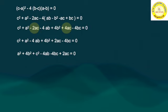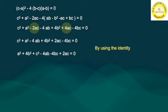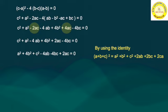To solve this, we recall an identity from 8th standard — the trinomial square. The trinomial square identity is: (a plus b plus c)² equals a² plus b² plus c² plus 2ab plus 2bc plus 2ca. This problem is an application type because we use our previous knowledge of this identity to solve it.